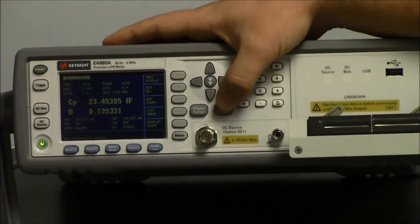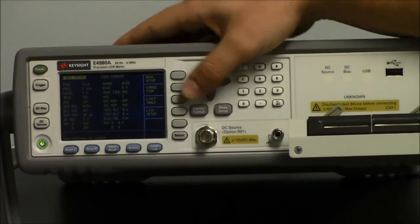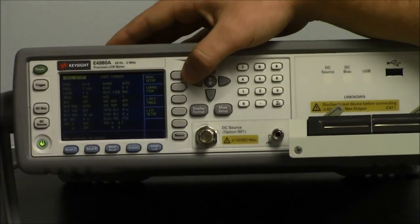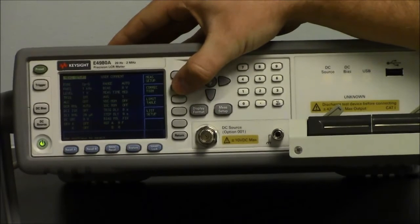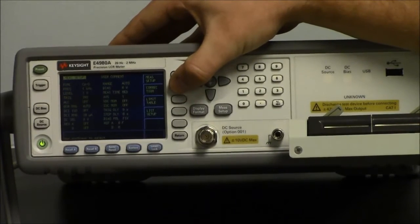First thing we need to do is hit the measure setup button. Now it's a little hard to see but there is a correction soft key on the right hand side of the screen. Hit this button.